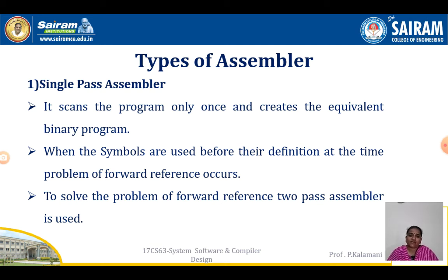Next, we will see the types of assemblers. There are three types: single pass assembler, two pass assembler, and multi pass assembler. A single pass assembler scans the program only once and creates the equivalent binary program. When symbols are used before their definition, the problem of forward reference occurs. In order to solve that forward reference problem, we go for a two pass assembler.